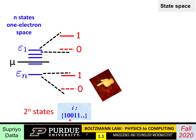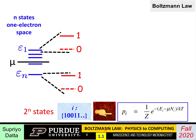When you want to describe the states of the entire system, you have to write a binary number — something like 1, 0, 0, 1, 1 — meaning: first state full, second empty, third empty, fourth full, fifth full, and so on. How many such states are possible in state space? It's two to the power N, because there are N digits and each can be zero or one — two to the power N combinations. That's the state space, as opposed to the one-electron space, which has N possibilities.